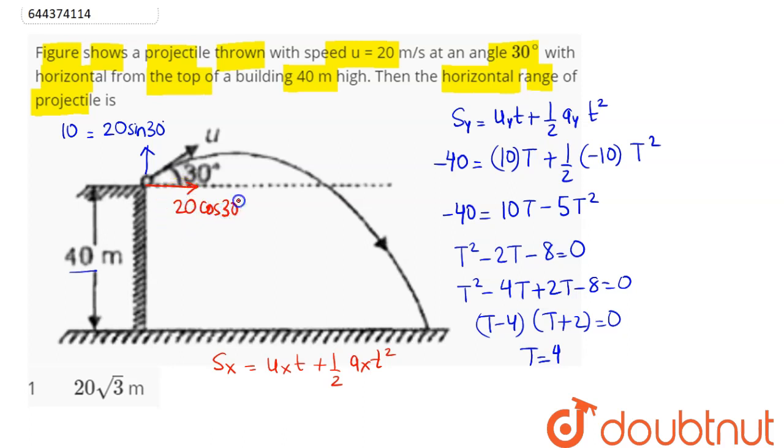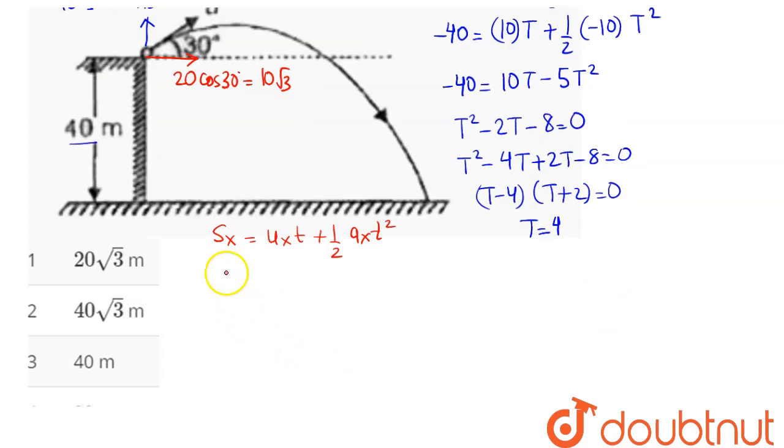cos theta. Cos theta is root 3 by 2, so this comes as 10 root 3. The range is 10 root 3 into time 4 seconds, and acceleration in x direction is 0. So the range comes as 40 root 3 meter. Option number 2 is the correct answer.